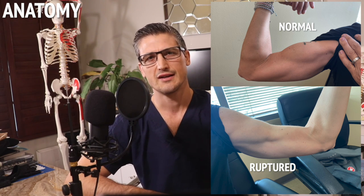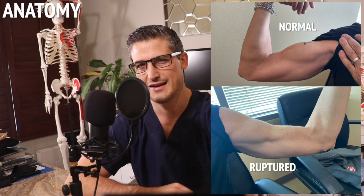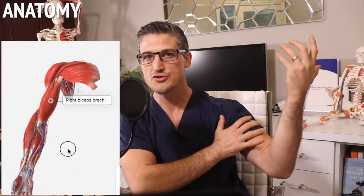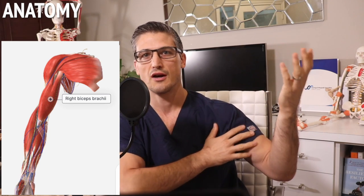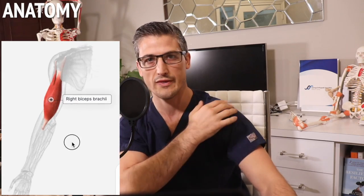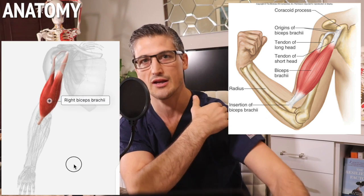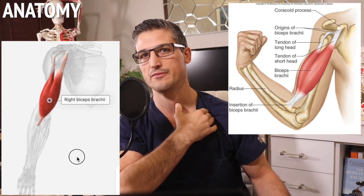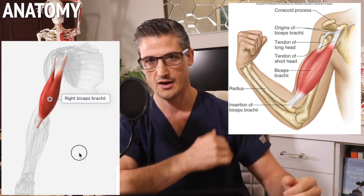A little bit about the anatomy. The biceps is a very noticed muscle — many people really care how it looks, and that's fine. It also has some important function, the most important of which may surprise you. As a refresher on terms: proximal is closer to the center of the body, while distal is further away. The biceps muscle has two parts that act as one muscle. There are two tendons that come down from our shoulder — one from inside the shoulder joint going to the long head, and the other from the coracoid process, the short head of the biceps.